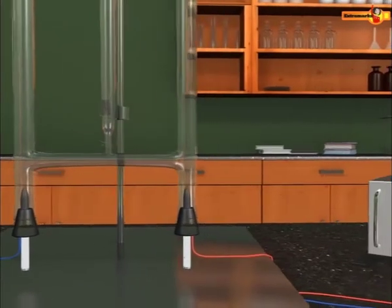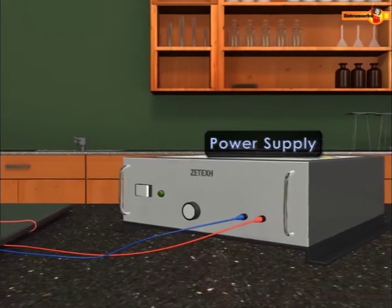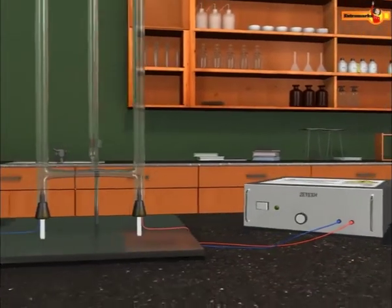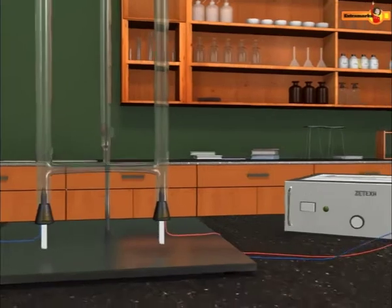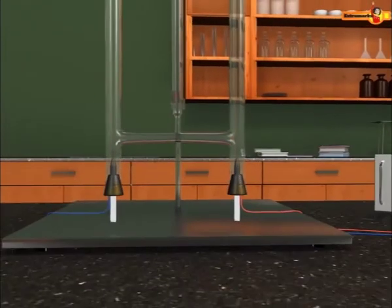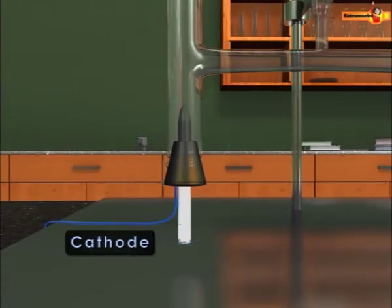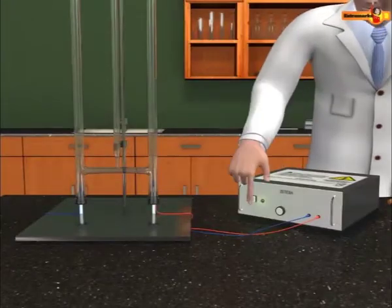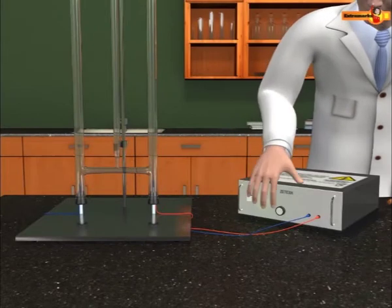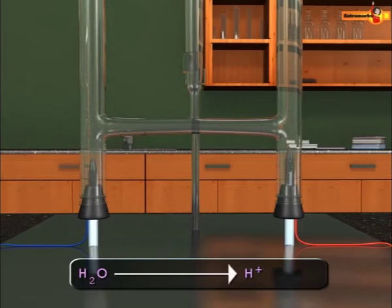The electrode connected to the positive terminal of the battery is called the anode, and the electrode connected to the negative terminal of the battery is called the cathode. When the electric current is passed through the water, it dissociates into hydrogen ions and hydroxyl ions.